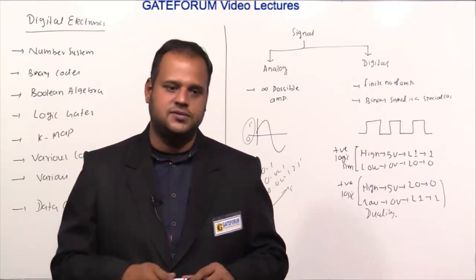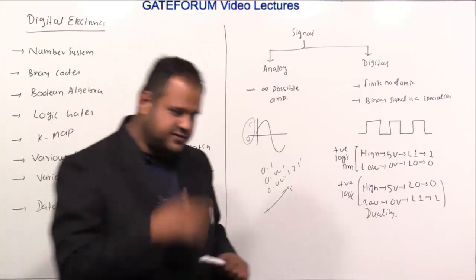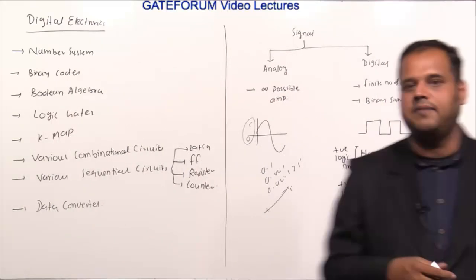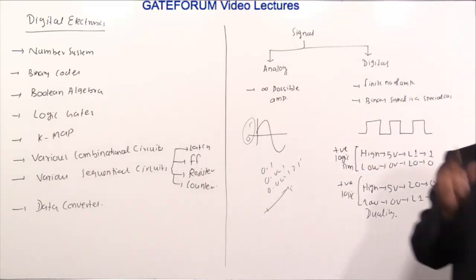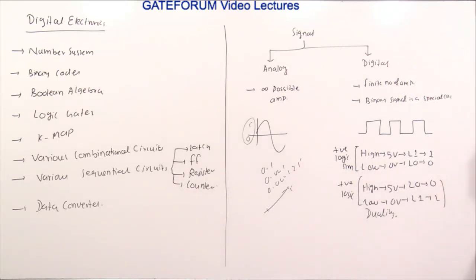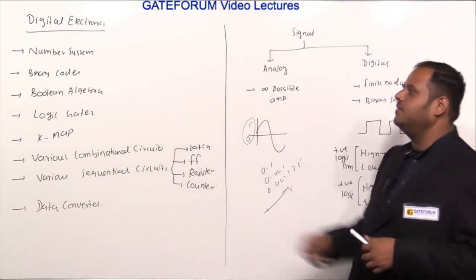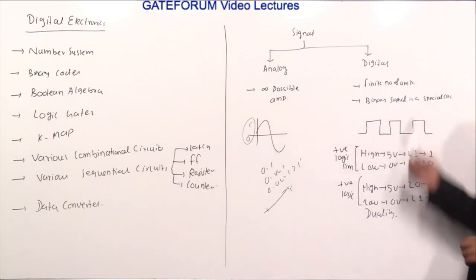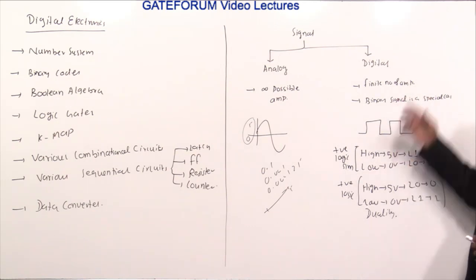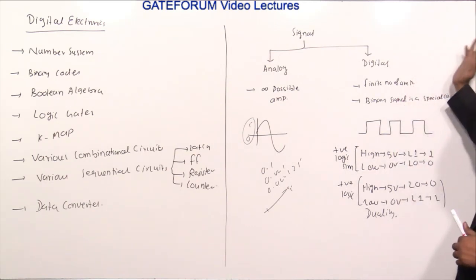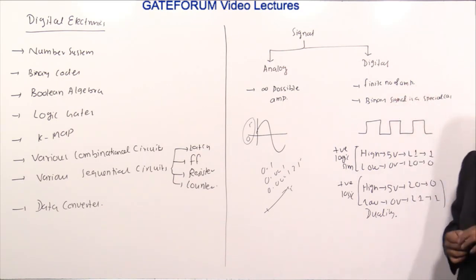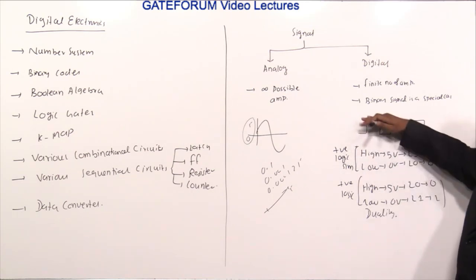If I restrict the finite number of amplitudes to only 2 levels in a digital signal, then the signal we get is called a binary signal. So an analog signal has infinite possible amplitudes, a digital signal has a finite number of amplitudes, and a binary signal is a special case of digital signals with only 2 amplitudes. When I say 2 amplitudes, it can be low or high.